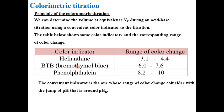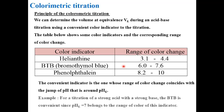For example, when titrating a strong acid with a strong base, pH at equivalence equals 7, so bromothymol blue would be the convenient indicator. Bromothymol blue might not be convenient for the titration of a weak acid with a strong base. The choice of indicator depends on the value of pH at equivalence.